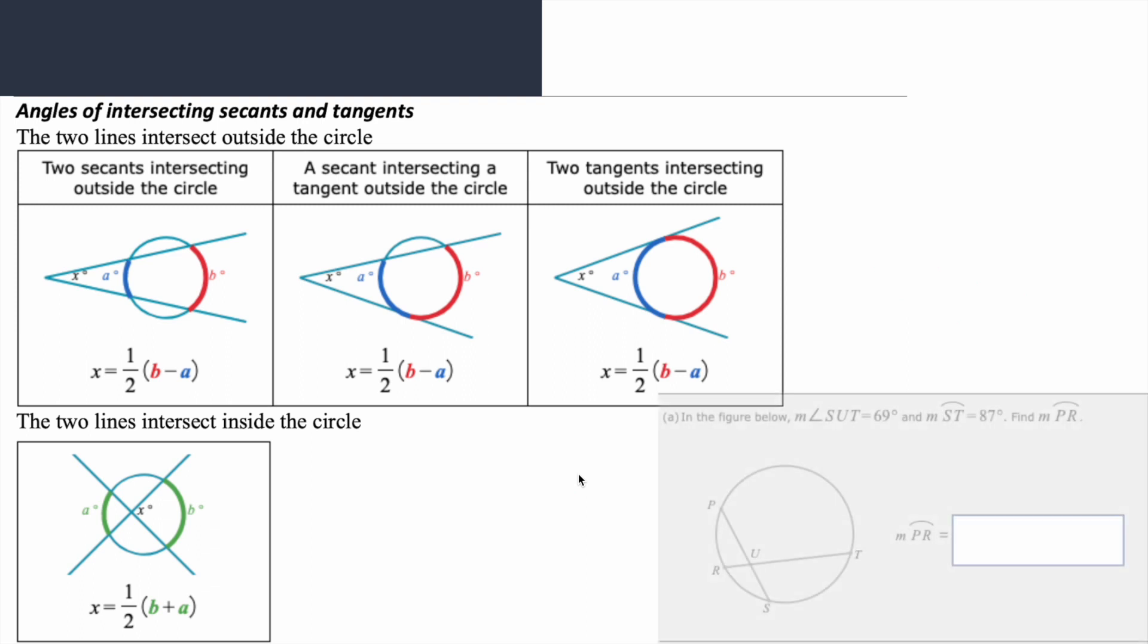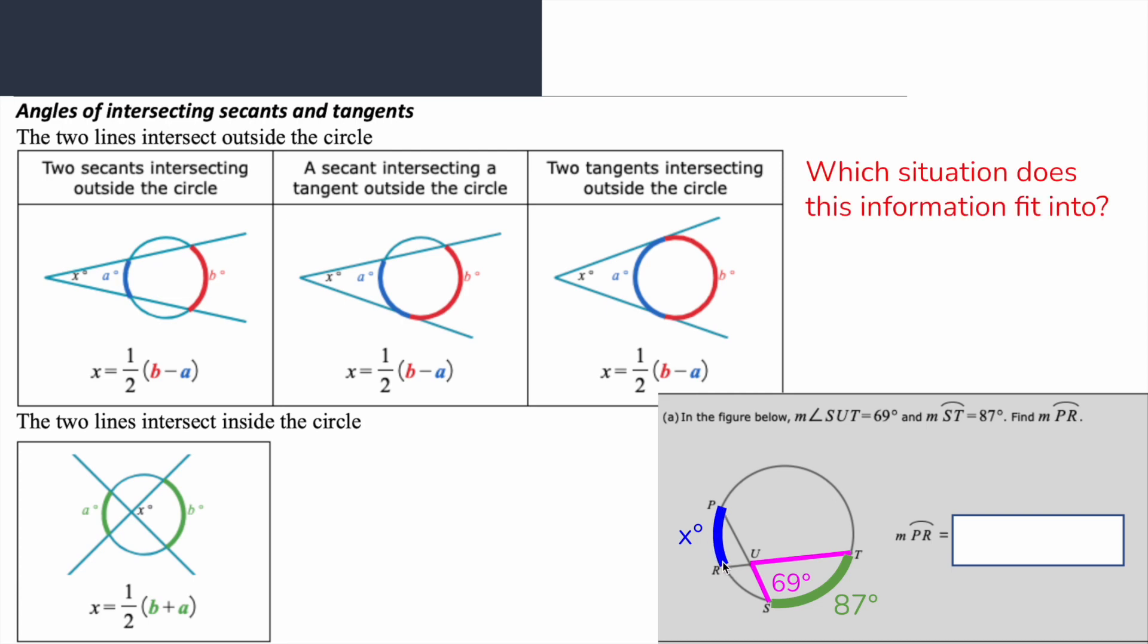Let's go ahead and apply this. Here's our first problem. In the figure below, the measure of angle STU is 69 degrees and the measure of arc ST is 87 degrees. Find the measure of arc PR. Let's go ahead and mark these - here's my given angle and my given arc, and they want me to find this other arc. Which situation does this fit in?